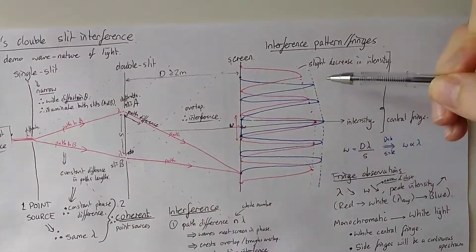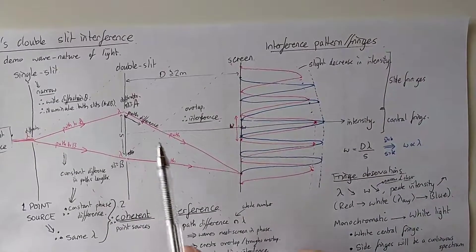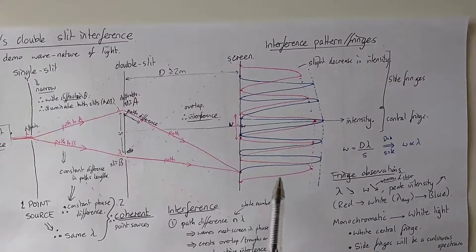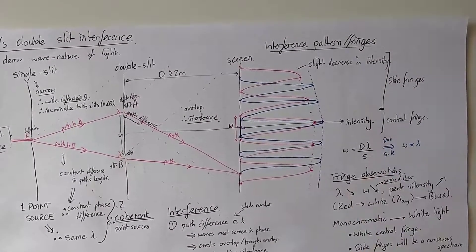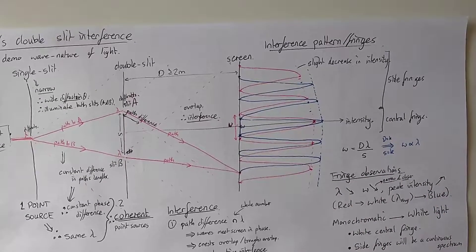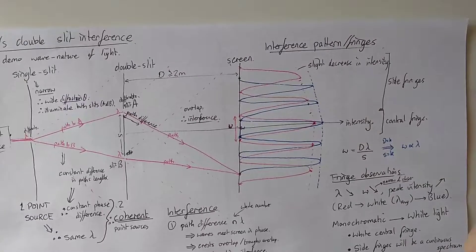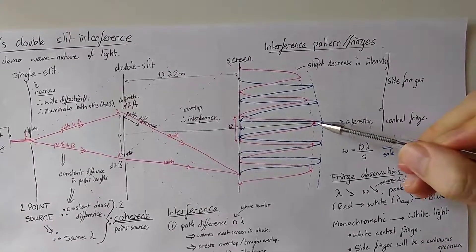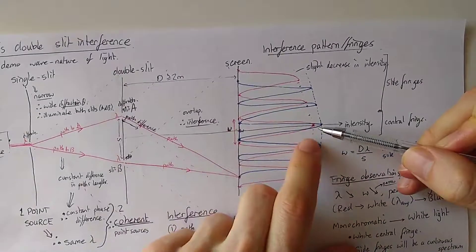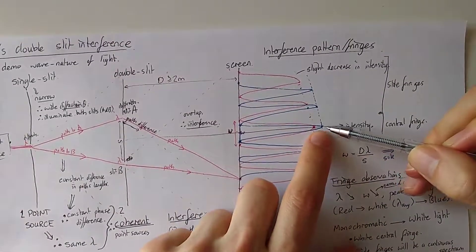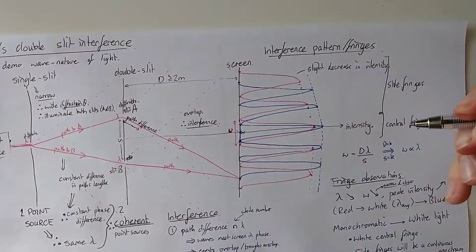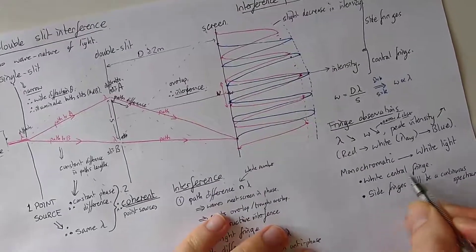In these two examples, we've considered using red light and we've considered using blue light. White light is a mixture of all of them. But by considering these two extremes, we can extrapolate what would happen with white light. First of all, in the centre, we're going to have red and blue and any other colour. And that's why you get a white central fringe. That's what we've written down here.